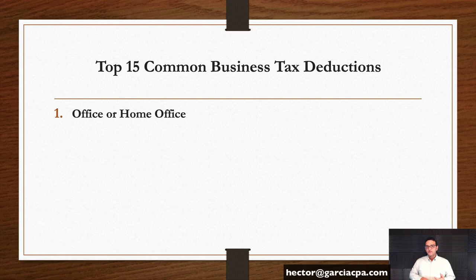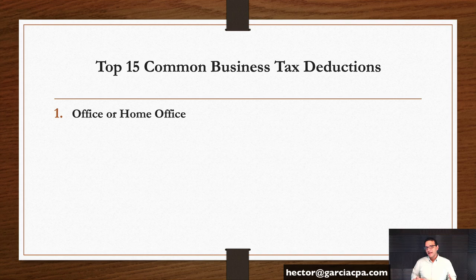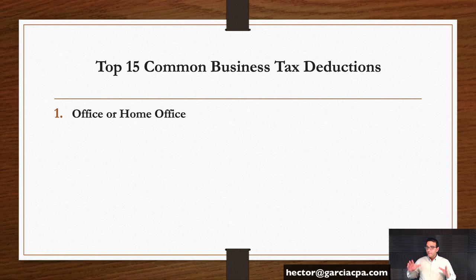Number one: your office expense or home office expense. If you physically have an office, renting and equipping it is deductible. If you have dedicated, isolated space in your house that's only for business purposes, you can deduct it by taking the percentage of the square footage. There's also a safe harbor rule: take the square footage of that space, multiply it by $5, limited to 300 square feet. That gives you a $1,500 deduction right off the bat for any business income.